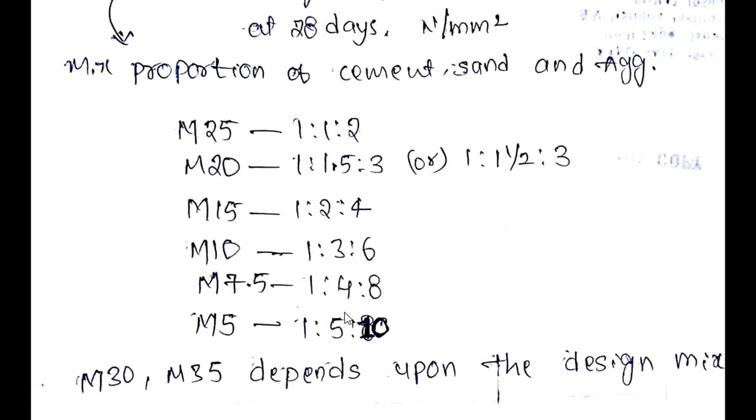You can see here 1, 2, 3, 4, 5 except for M20. And in case of aggregate, the value is obtained by proportion of sand into 2. Means if we multiply the proportion of sand with 2, we will get the proportion of aggregate.